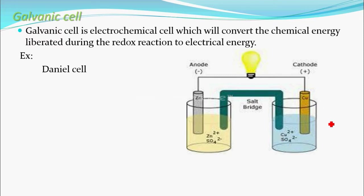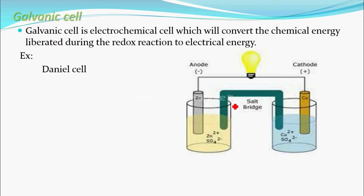This is the cathode half cell. The salt bridge provides the internal connection between the two half cells. We connect the anode and cathode through an external circuit, while the salt bridge works as the internal circuit.